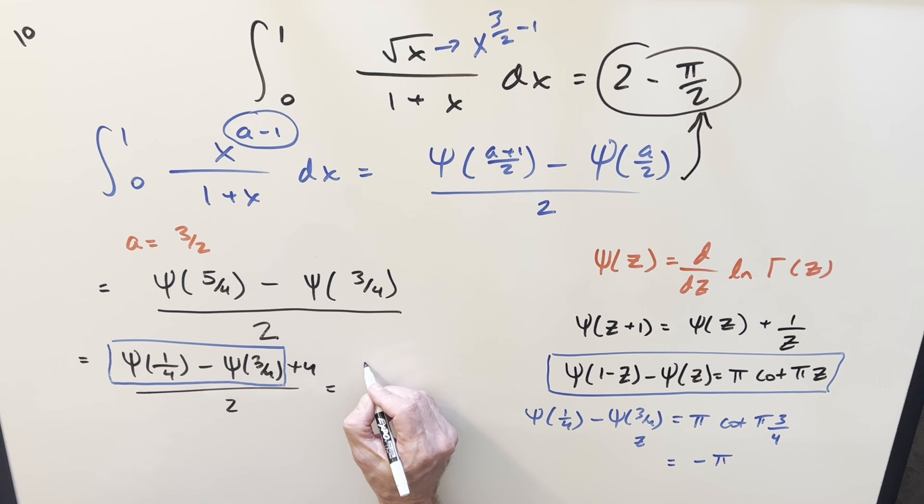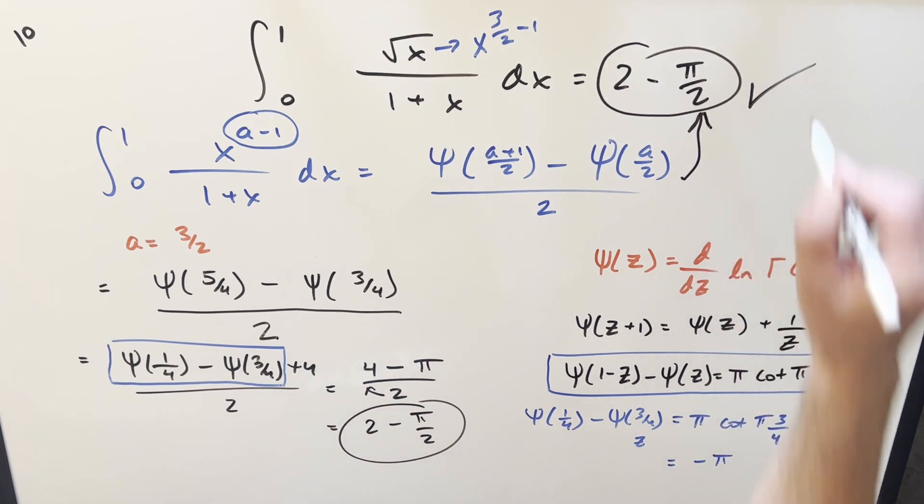So take that, and we'll plug it back in here. I'll reorder it again. This I can write as 4 minus pi over 2. Simplify it, divide the 2 in. For my final solution to this, we just get 2 minus pi over 2, and that's going to match what we got with method 1.